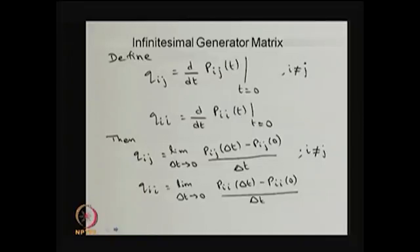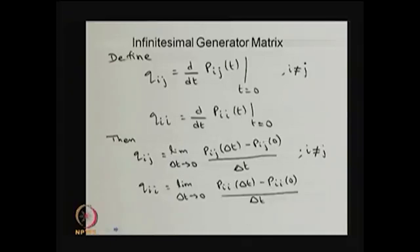I am going to define the quantity called q_ij, and later this is going to form a matrix called the infinitesimal generator matrix. The definition of q_ij is: take the derivative of p_ij(t) with respect to t, then substitute t equal to 0, for all i not equal to j. The diagonal element q_ii is defined separately because it is different from all other elements.